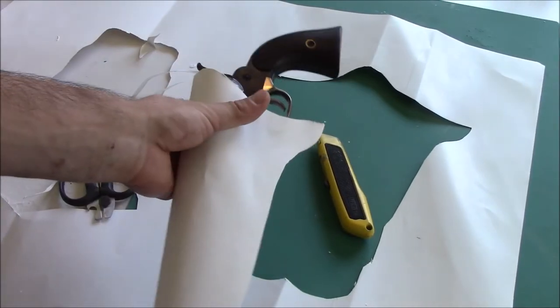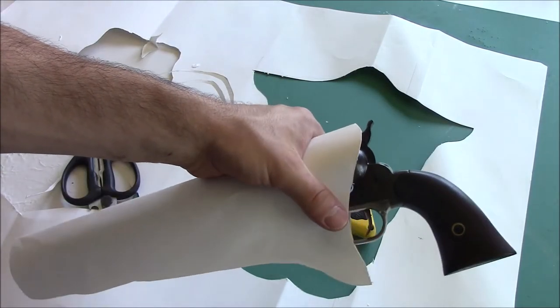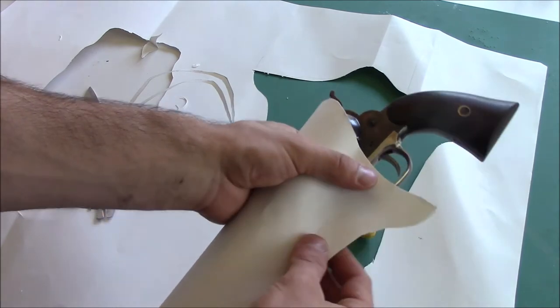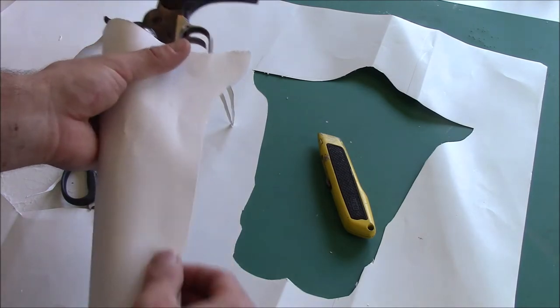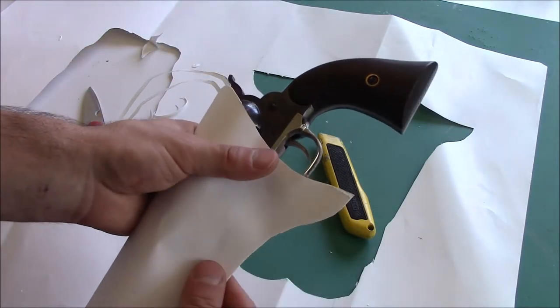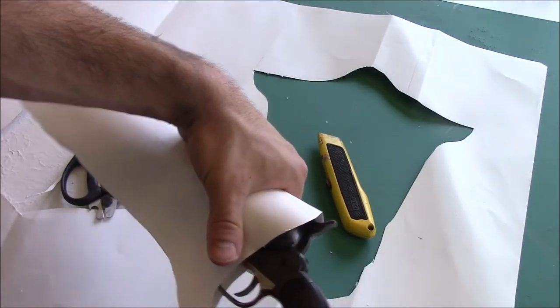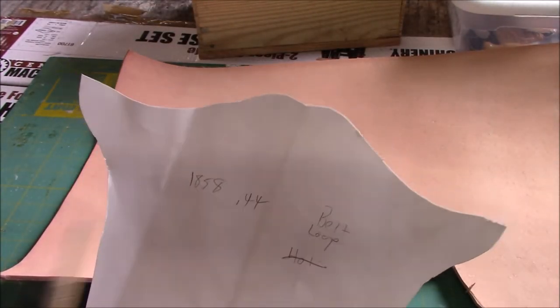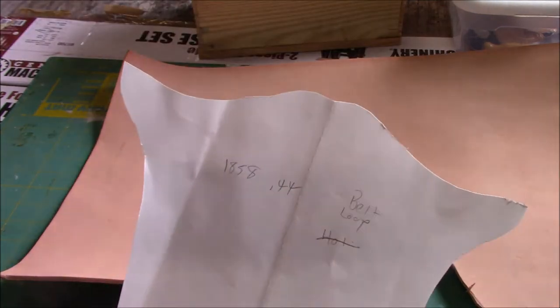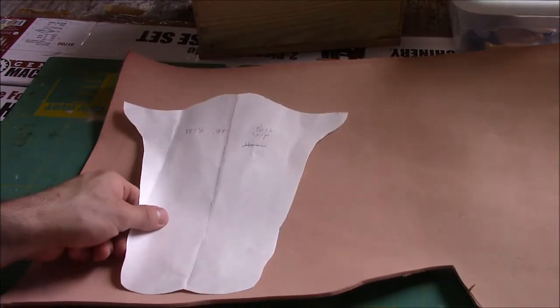I made my template a little too big. What you want to do after you make the template is take the gun that you're going to be putting in it, put it in, make any adjustments you need to make at this point in the process and give yourself enough room for stitching but not too much room. It's just too bulky. And this looks pretty good. So we got our template here, it's finished. And you want to mark your belt loop side because you don't want to put the belt loop on the wrong side.